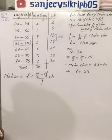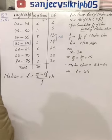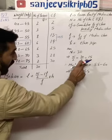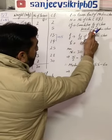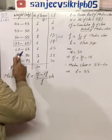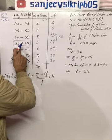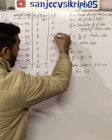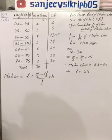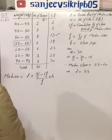Now if we talk about the next terms, N by 2 we already got as 15. CF is cumulative frequency of class preceding median class. Median class is 55 to 60, so the cumulative frequency above it is 13. This means our CF will be 13.